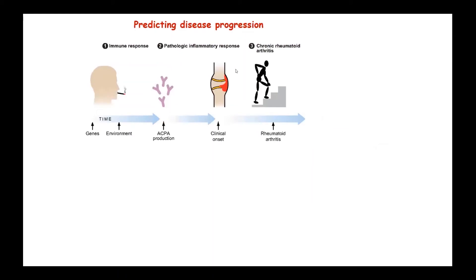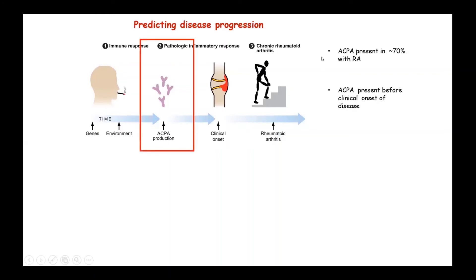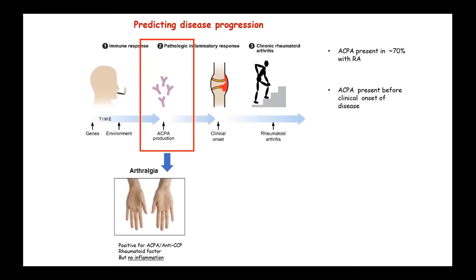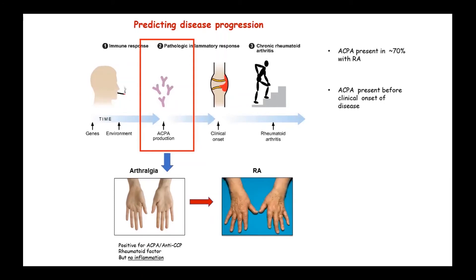One of the studies we are carrying out in our lab involves rheumatoid arthritis patients, and we are trying to understand the prediction of disease progression. We have learned that rheumatoid arthritis requires a genetic and environmental insult, which then leads to the clinical onset of the disease. Around 70% of patients with rheumatoid arthritis produce autoantibodies like the ACPA antibody, and these can be present even before the clinical onset of the disease. We have identified a cohort of subjects — which we call our arthralgia cohort — who are positive for the autoantibody but present no inflammation and still have no clinical manifestation of the disease. A recent study has shown that between 30 to 70% of these subjects will eventually develop rheumatoid arthritis.